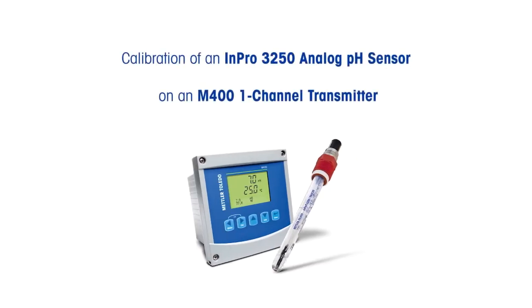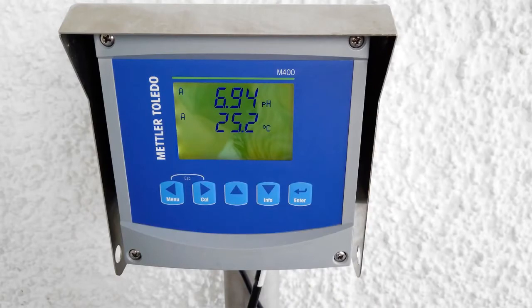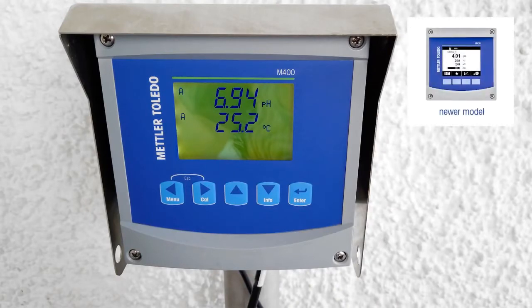Here's how to do a two-point calibration on a Mettler Toledo N-PRO 3250 analog pH sensor using an M400 one-channel transmitter. This M400 model was produced from 2008 to 2018. If yours looks different, please find our calibration video on the next generation of M400.